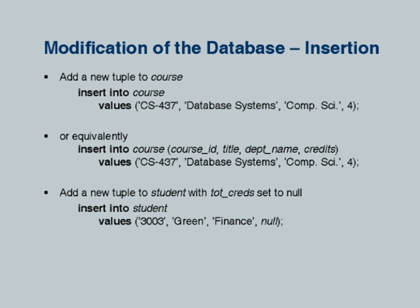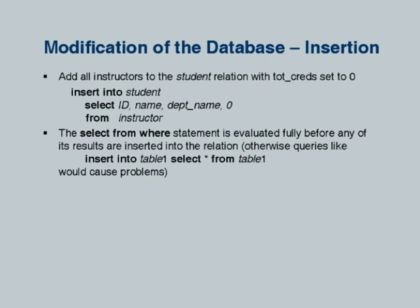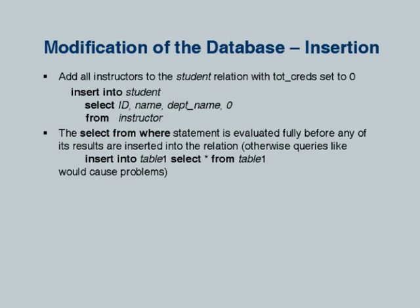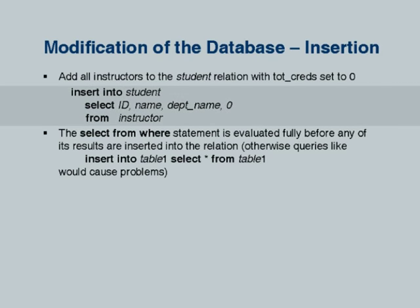For insertion, we have the basic form: just give the values for each attribute, or specifically list attribute names and give values for those. If you omit any, the value will be either the default value if you have specified one, or null. If the attribute cannot take a null value, there will be an exception. We can also have a subquery instead of giving single values — the results of that subquery are inserted. For example, add all instructors to the student relation with total credits set to 0 in the same department. This query is fully evaluated before insertion — otherwise inserting from a table back into itself could cause infinite loop insertion, assuming no primary key constraint.